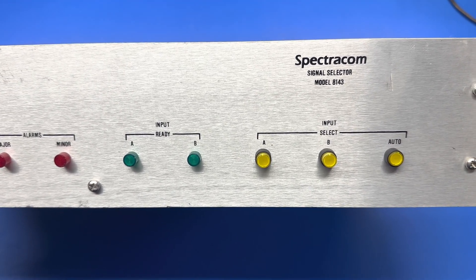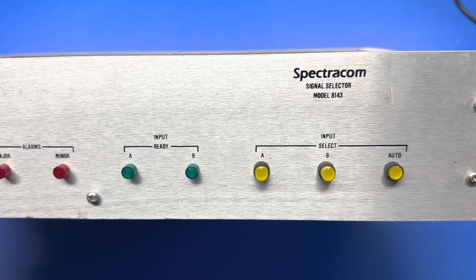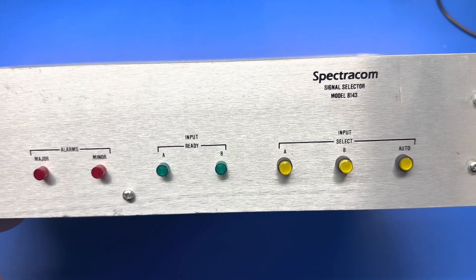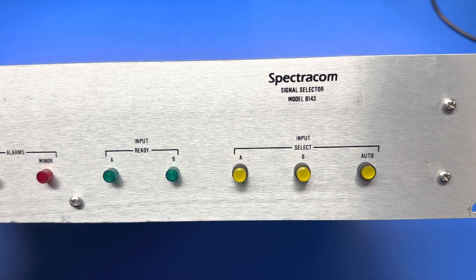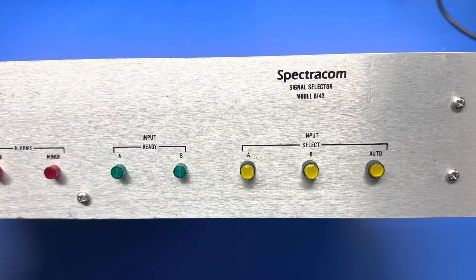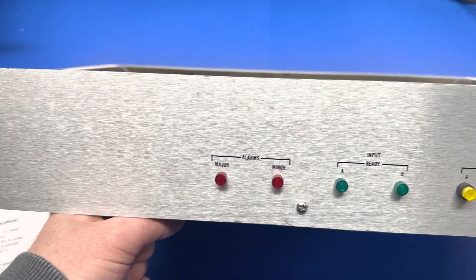A quick video on this Spectracom 8143 signal selector, also known as a distribution amplifier. This will allow you to switch between two 10 MHz frequency standards and distribute them to up to 12 devices on the back side.